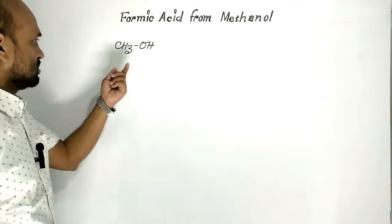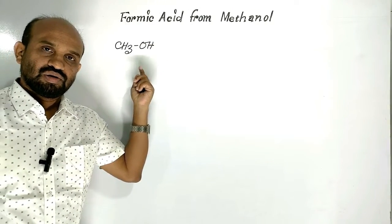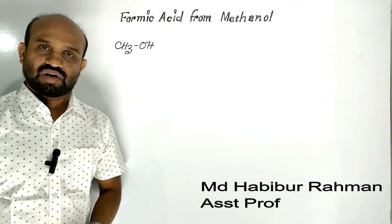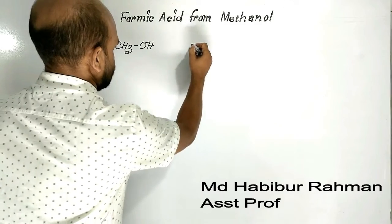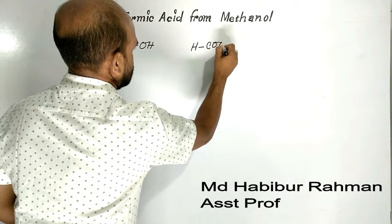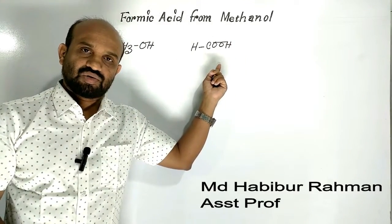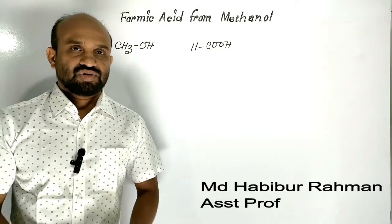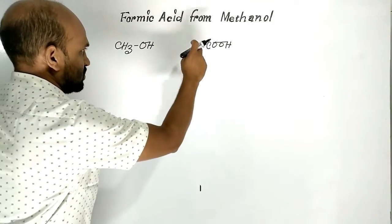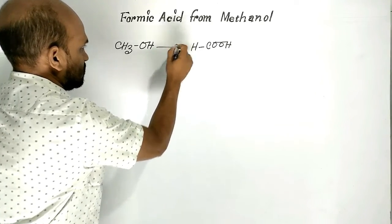CH3OH — this is methanol or methyl alcohol, also known as carbenol. This is formic acid or methanoic acid. In this lesson we are going to learn the preparation reaction of formic acid from methanol.